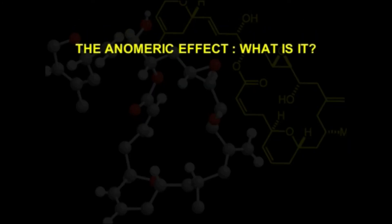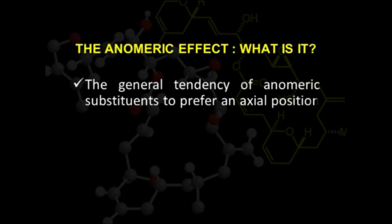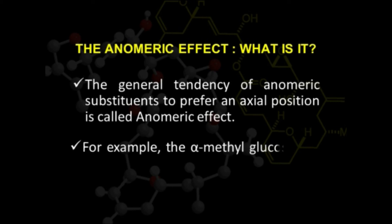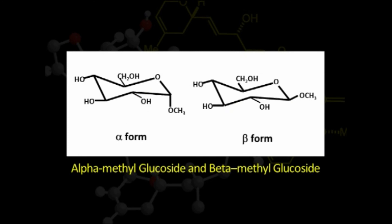Another very important application of hyperconjugation is to understand the anomeric effect. The general tendency of anomeric substituents to prefer an axial position is called the anomeric effect. For example, alpha-methyl glucoside is more stable than beta-methyl glucoside. Glucose shows two conformational isomers—alpha form and beta form. In the alpha form, the substituent group lies at the axial position.